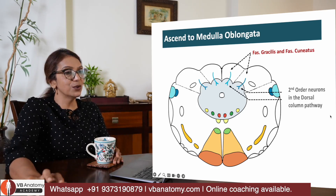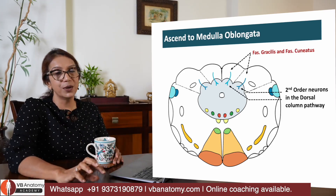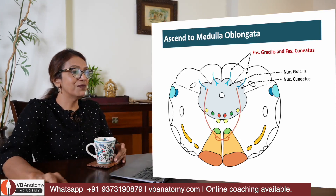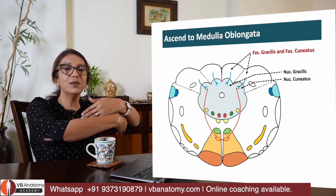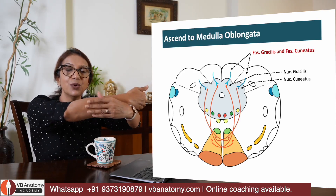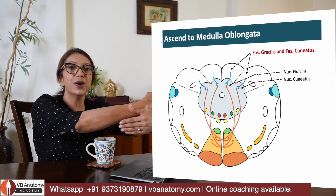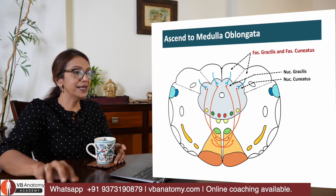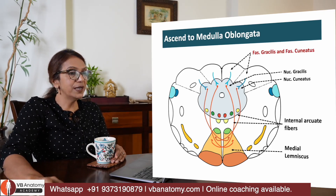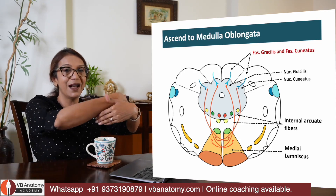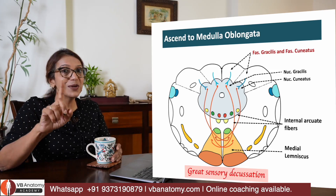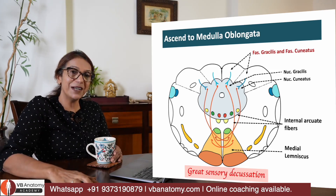The neurons of nucleus gracilis and cuneatus act as second order neurons in the dorsal column pathway. They cross over anteriorly — those from fasciculus cuneatus cross more posteriorly, those from fasciculus gracilis cross more anteriorly. These crossing fibers are called internal arcuate fibers, forming an arc. They then form a fiber bundle called the medial lemniscus. This crossing is called the great sensory decussation — there is also a great motor decussation, described in the pyramidal tract lecture.